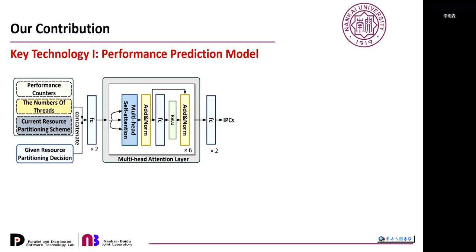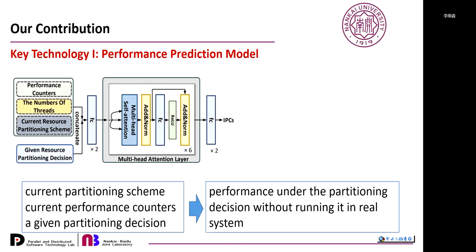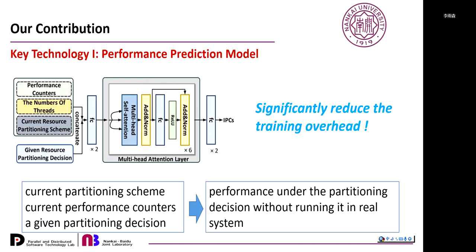We introduce the key technologies used in the framework. The first is a performance model that takes the current partitioning scheme, current performance counters, and a given partitioning decision as inputs, and predicts the performance of applications under that decision without running it in the real system. The intention is to reduce training overhead, since training the DRL model requires a large number of samples. Collecting samples from the real system would be unacceptably slow, but with this prediction model we can generate training samples without interacting with the real system.